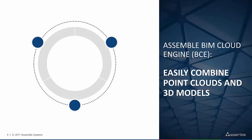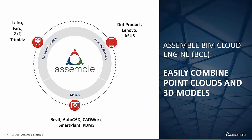Moving on to Assembl BIMcloud Engine — for short, BCE. It extends your ability to add point cloud files and combine field data with BIM. Point cloud files can come from handheld scanners — that is, products like Lenovo or Asus phablets — or tripod scanners like Faro, Leica, ZNF, and others. Combining both point cloud and BIM all in the cloud now gives everyone access to as-built data aligned to the design model.